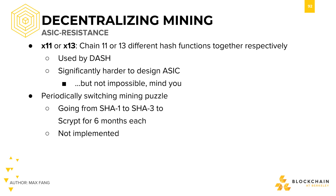The cryptocurrency Dash uses the X11 hashing algorithm, using a chain of SHA-3 variants. Dash's X11 was designed to be hard to make an ASIC for, but not impossible, so it was never really intended to be ASIC-resistant. Dash's developers wanted to get a good distribution of coins early on in Dash's lifecycle. Later on, if someone happened to develop an ASIC for X11, the coins would have already been distributed in a fair way — and that's exactly what happened.